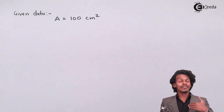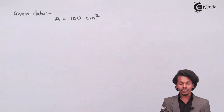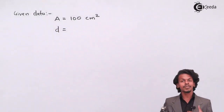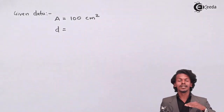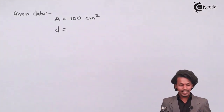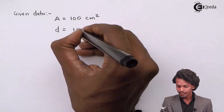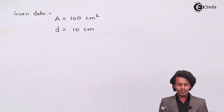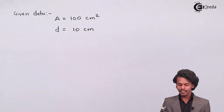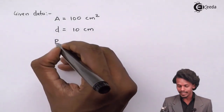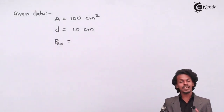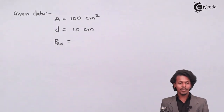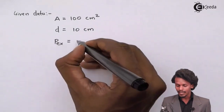So the displacement (d) from the original position to the final position is 10 cm. The external pressure provided is P_ex = 1.0 atmosphere.